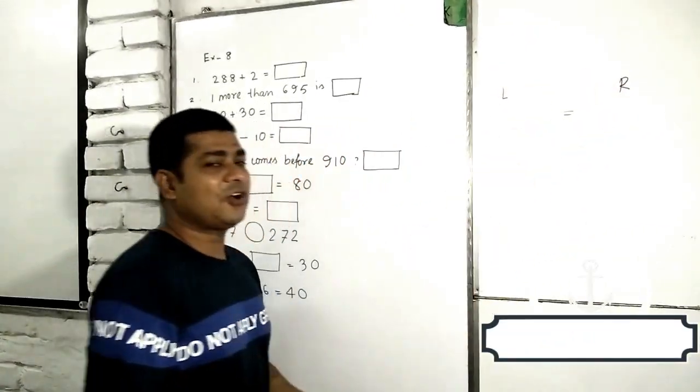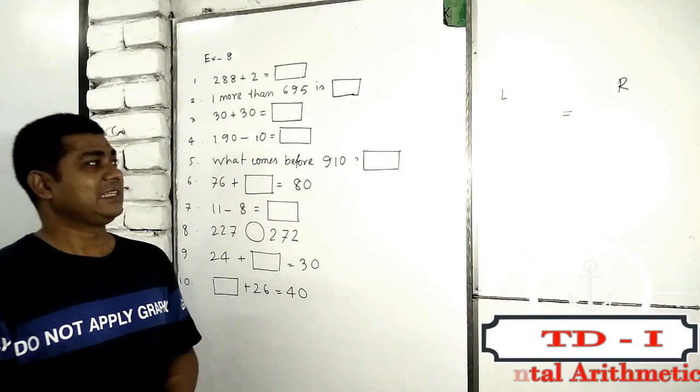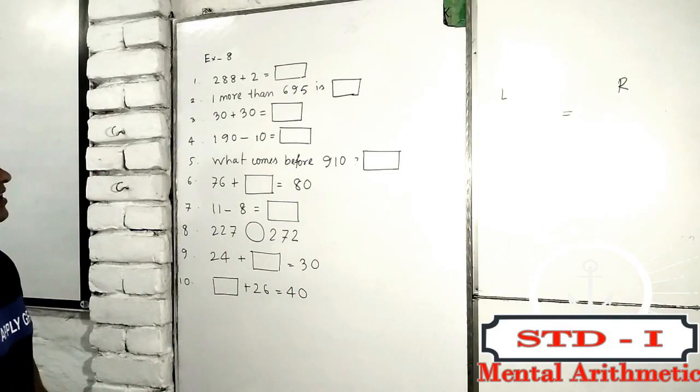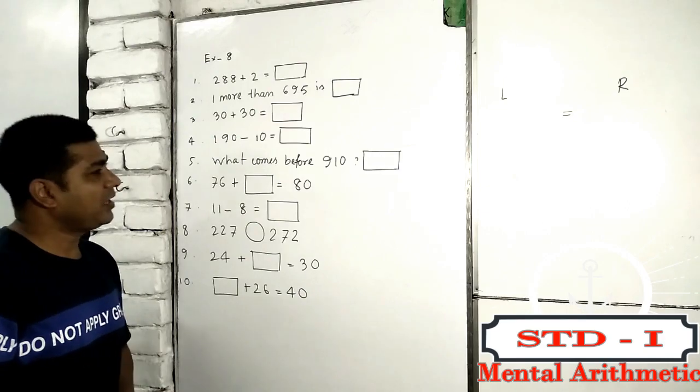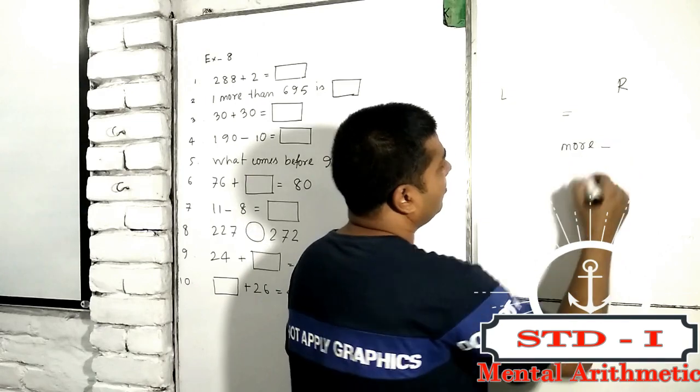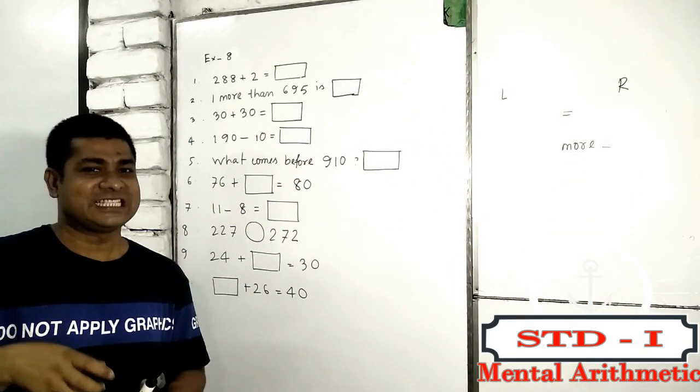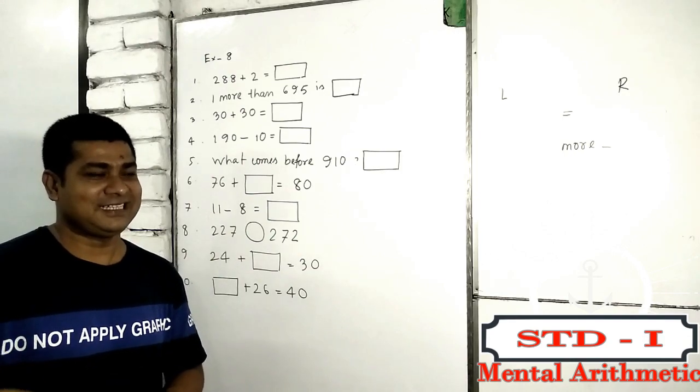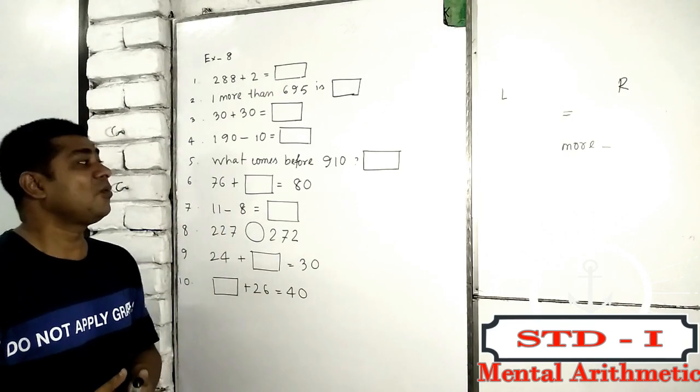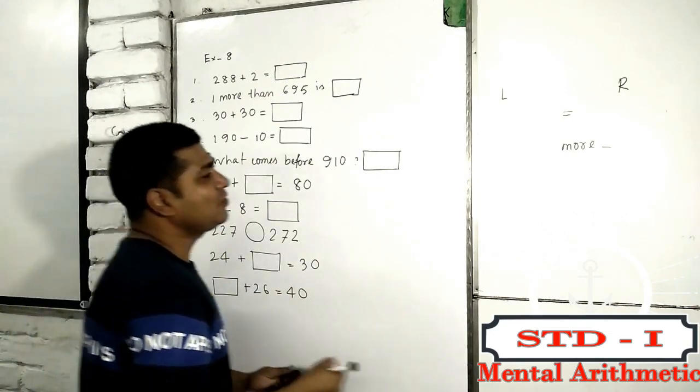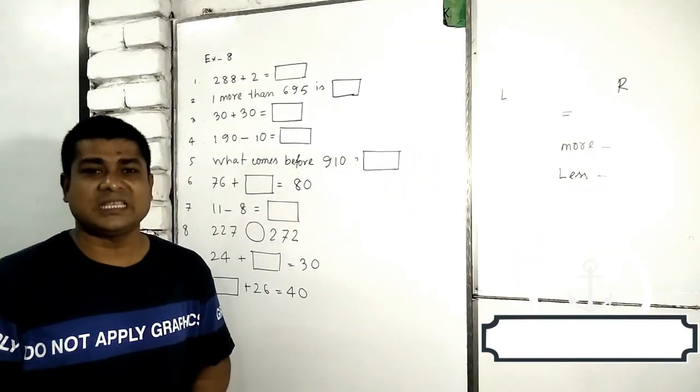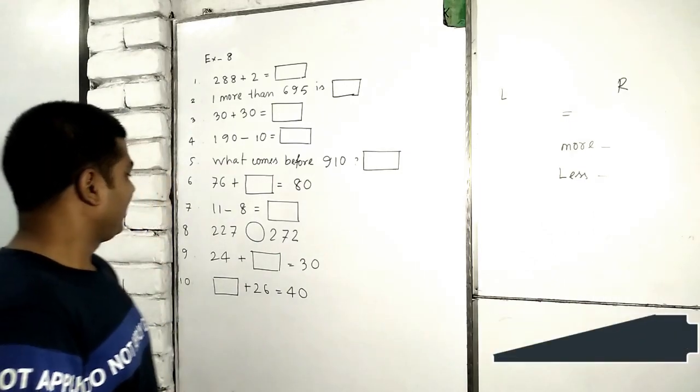Another thing we are getting: more. More means I have to increase something, I have to make larger. What I have to increase, the question will give you information. And also we are getting less. Less is the opposite of more. That means you have decreased some number.